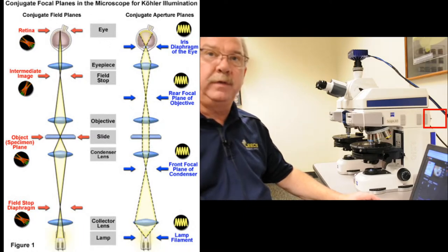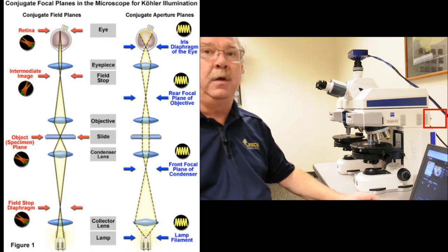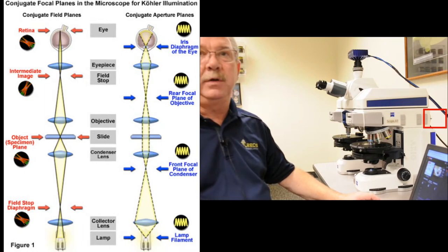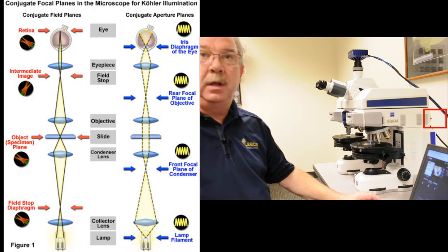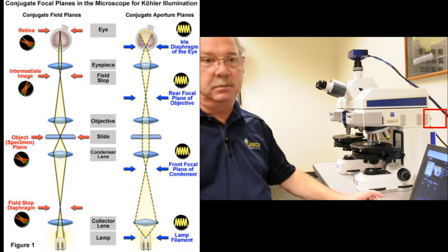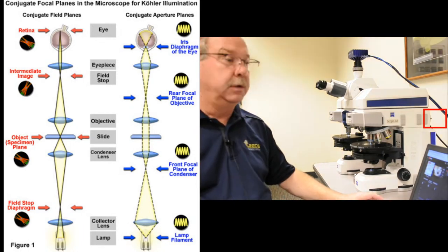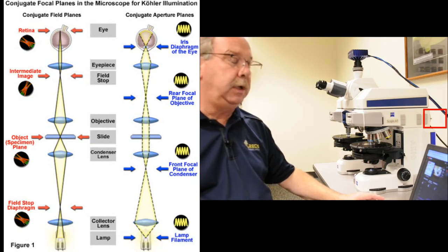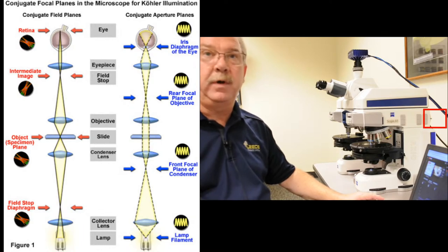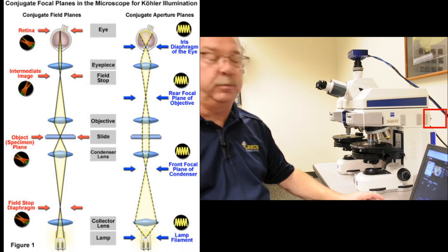Then we have the rear focal plane of the objective — this is actually the image plane where the optical interference figure is viewed. And finally, there is an aperture plane at your eyeball. Your eye is a lens and is being used as part of the complete optical system. The real image for a field plane forms in the retina, an intermediate image is formed in the iris or at the front of your eye, and then your eye focuses it to that field plane in the back.